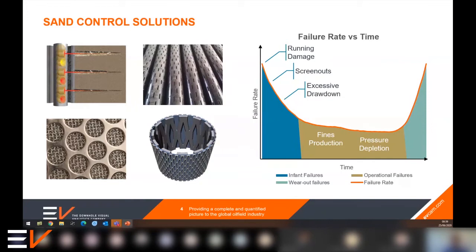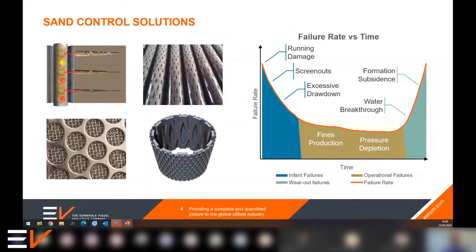Depletion results in the effective reservoir stress increasing and causing more sand. In the later life of the well, we may have to deal with water breakthrough, which can bring more fines, and it can cause scaling issues, resulting in plugging and potentially other hot spots in the well. The final consideration may be formation subsidence or fault movements that can be caused when reservoir pressure drops towards its final values. The point here is that the risk of sand production is present throughout the life of the well, and changes in conditions over time increase the likelihood of sand control failure.